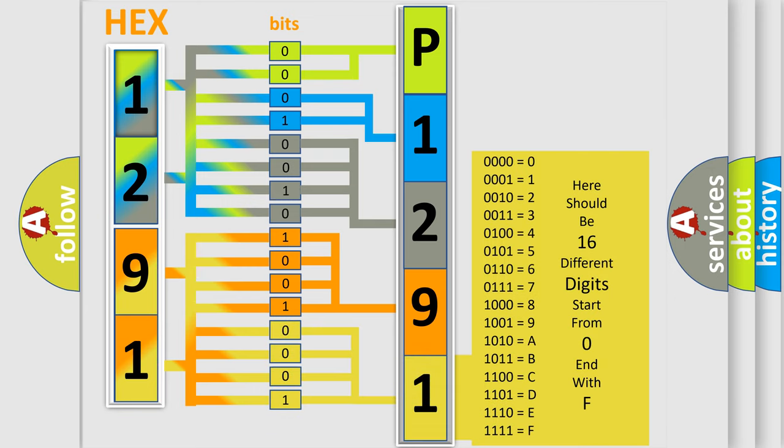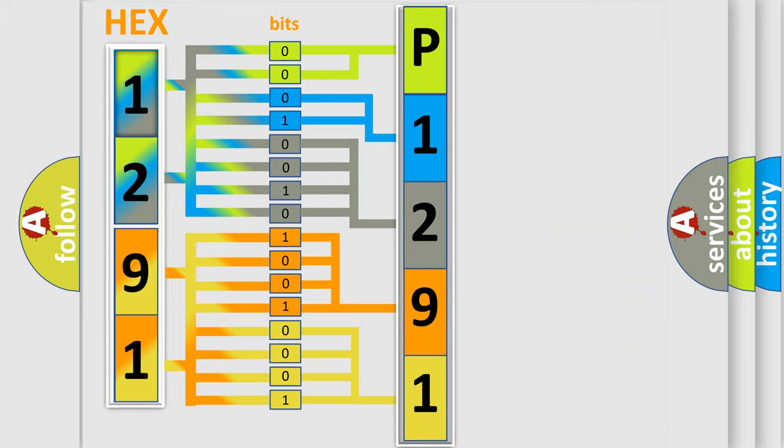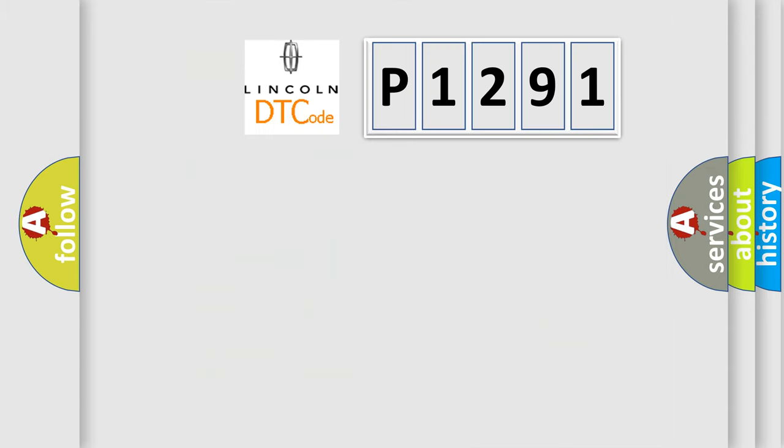We now know in what way the diagnostic tool translates the received information into a more comprehensible format. The number itself does not make sense to us if we cannot assign information about what it actually expresses. So, what does the diagnostic trouble code P1291 interpret specifically?